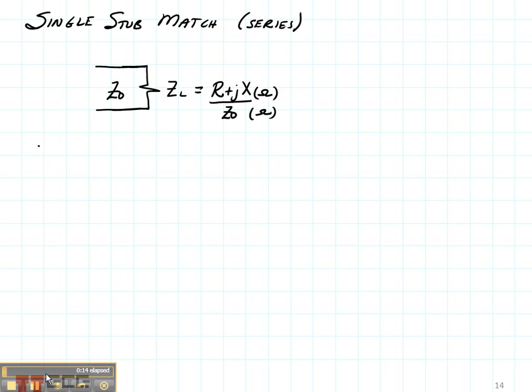The thing that we need to do now is put these various pieces together to design a single stub matching network. So let's assume that we have a load that is r plus jx. It's not matched to the characteristic impedance z0, but we want it to be.